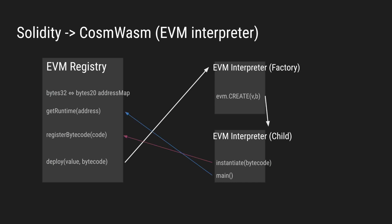So now we can have factory contracts that can produce other contracts. In the next demo, I will show you a factory contract deployed with the registry that has its own deploy function that uses the CREATE opcode. And this CREATE opcode has been implemented in a way that instantiates the child contract from the code ID supplied by the registry. Then this child contract knows to again register its runtime bytecode with the registry and retrieve its bytecode from the registry when a transaction or query is sent its way.